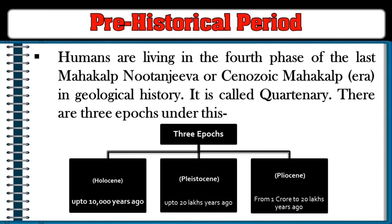In geological terms, earth is about four to eight billion years old and life started on it about three to five billion years ago. The geological time period of the earth is divided into mahakalpas (eras), each mahakalpa into several kalpas (periods), and kalpas into several yugas (epochs). Humans are living in the fourth phase of the last mahakalpa — the Nutan Jiva or Cenozoic era.